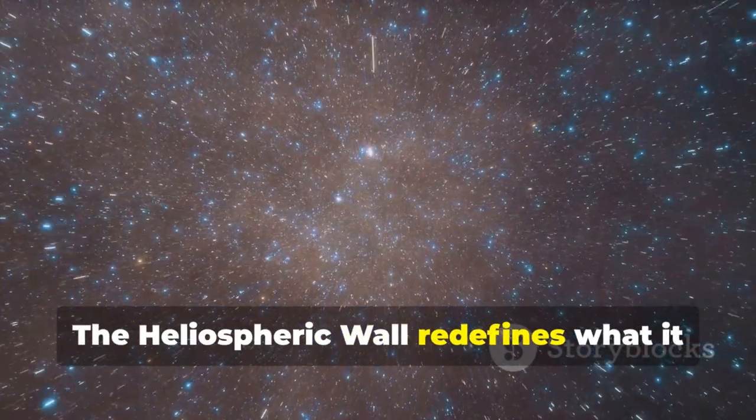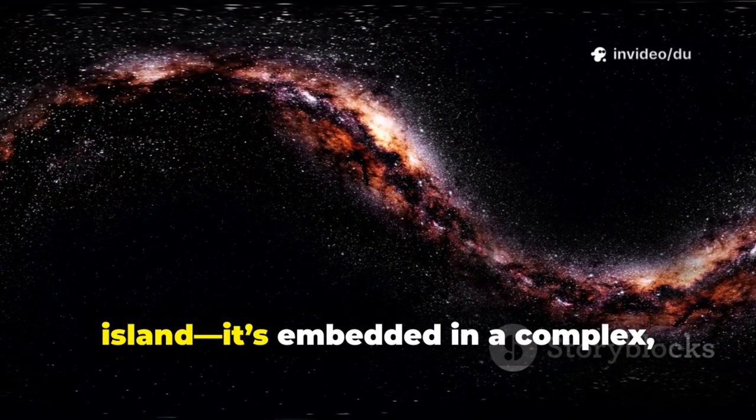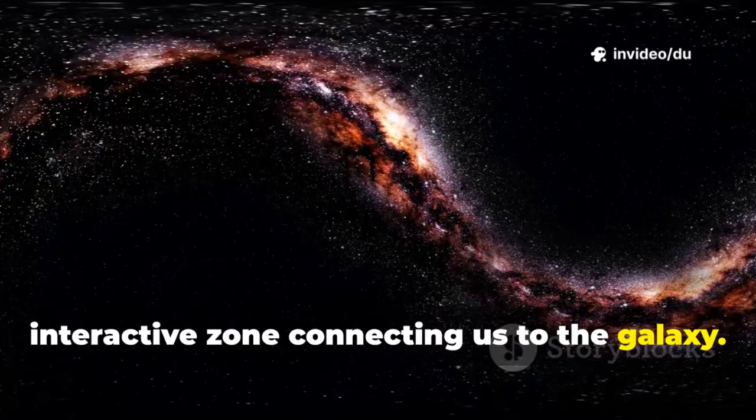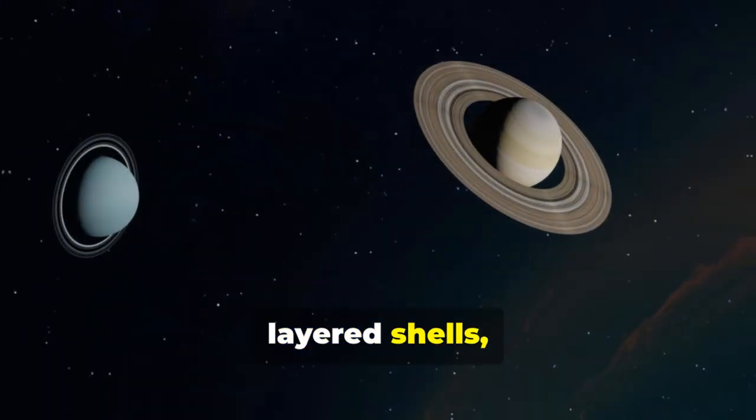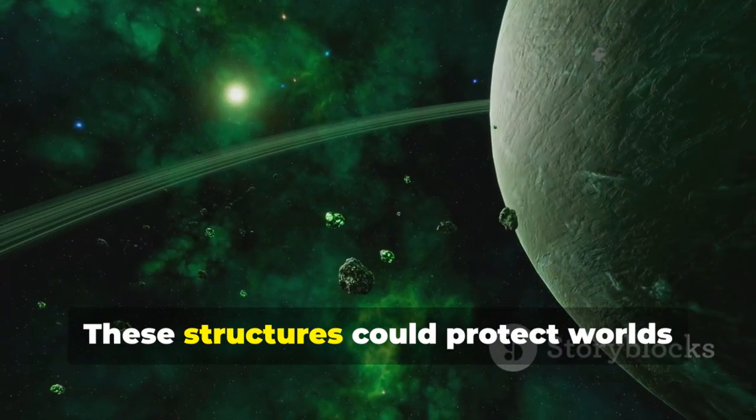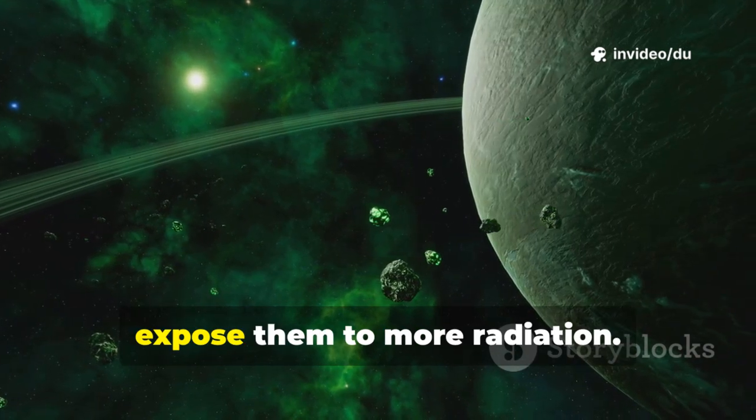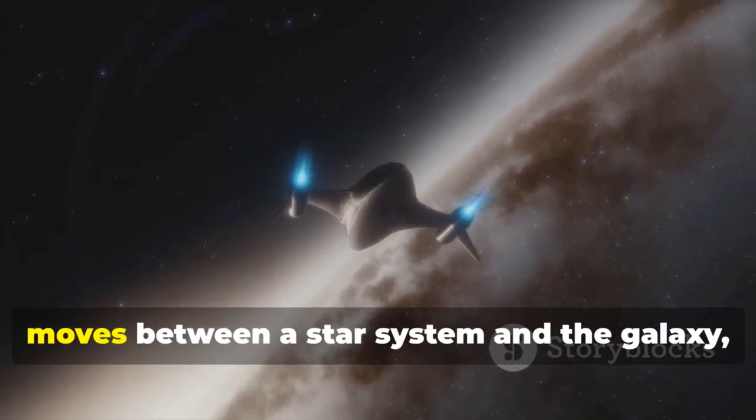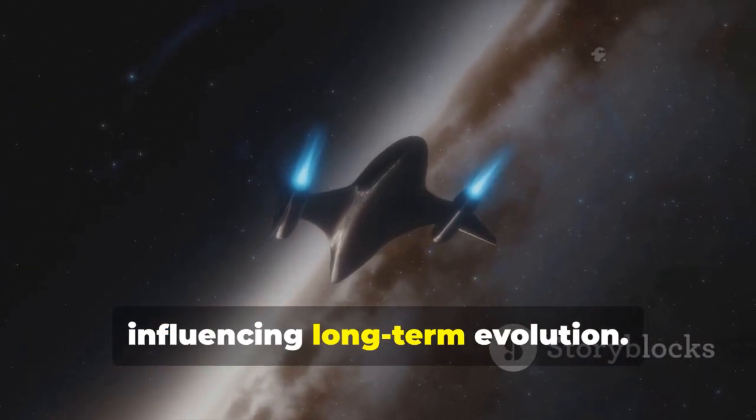The heliospheric wall redefines what it means to be a star system. Our solar system isn't an isolated island. It's embedded in a complex, interactive zone connecting us to the galaxy. If such walls are common, other stars may also be shielded by layered shells, affecting the habitability of their planets. These structures could protect worlds from cosmic rays or, in sparse regions, expose them to more radiation. The wall also complicates how material moves between a star system and the galaxy, influencing long-term evolution.